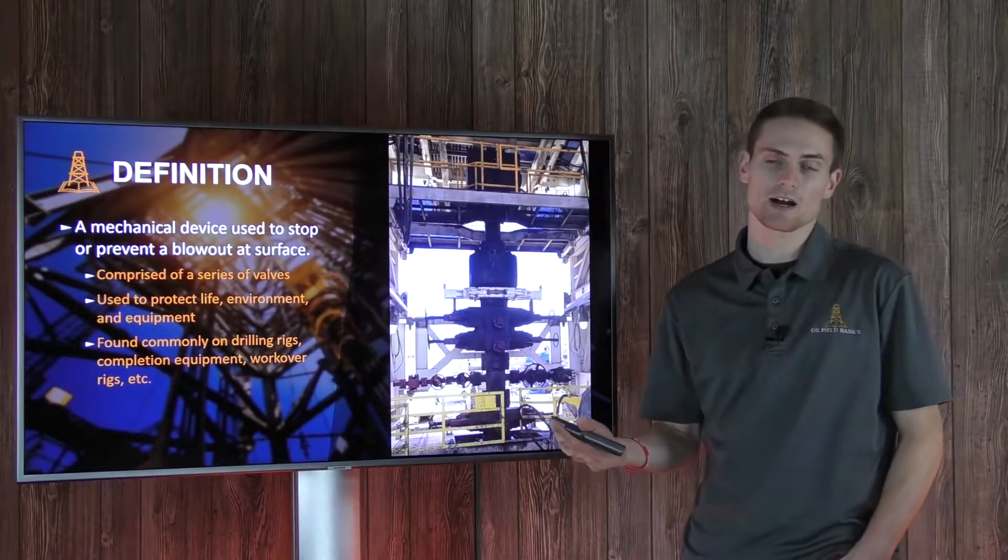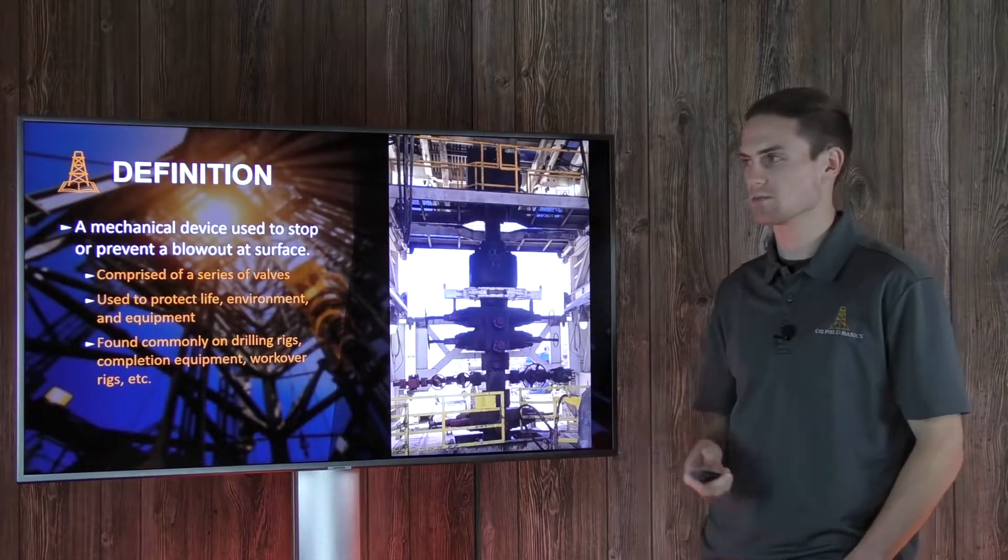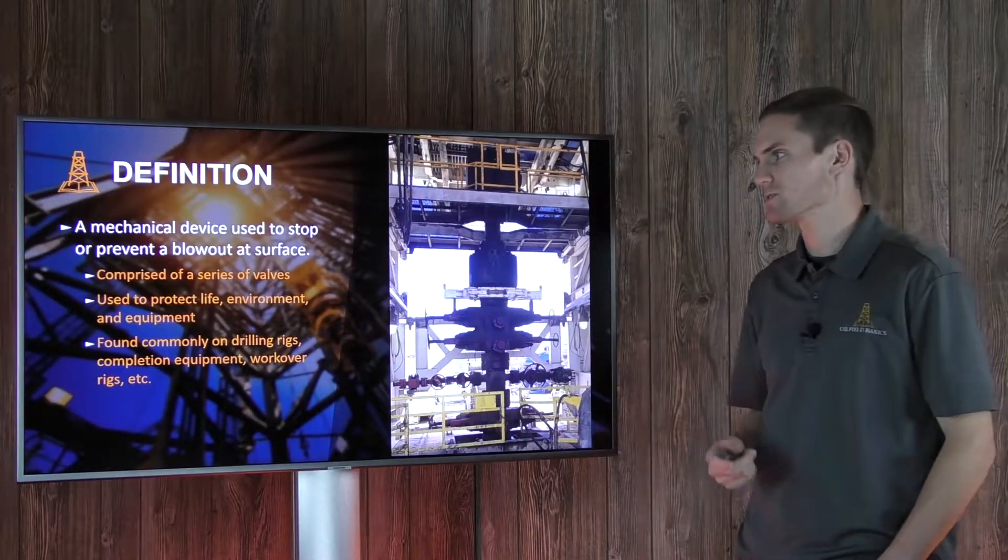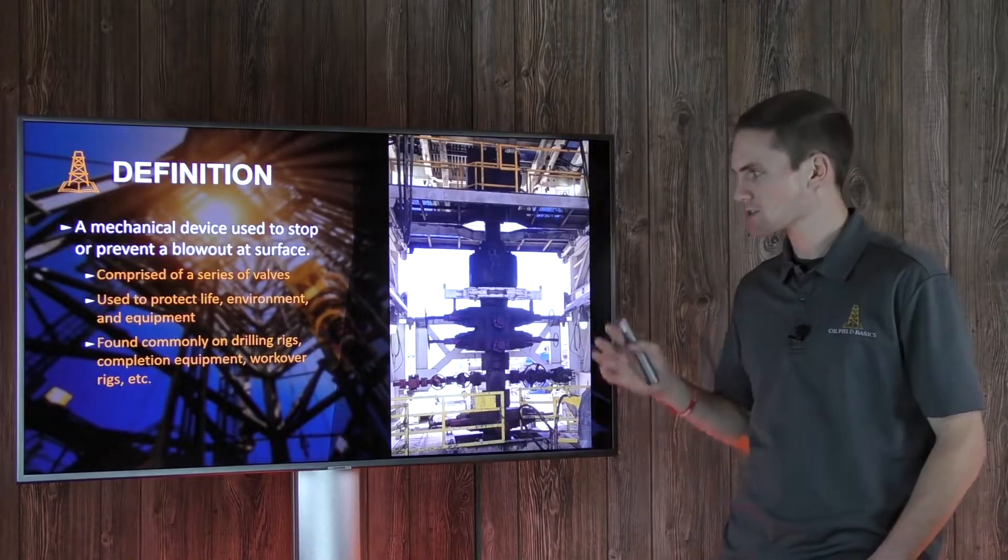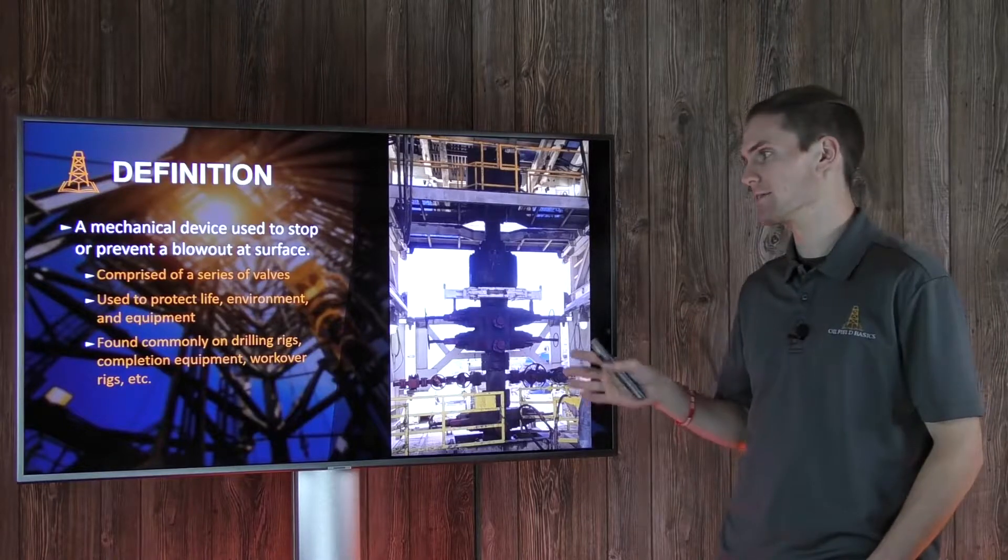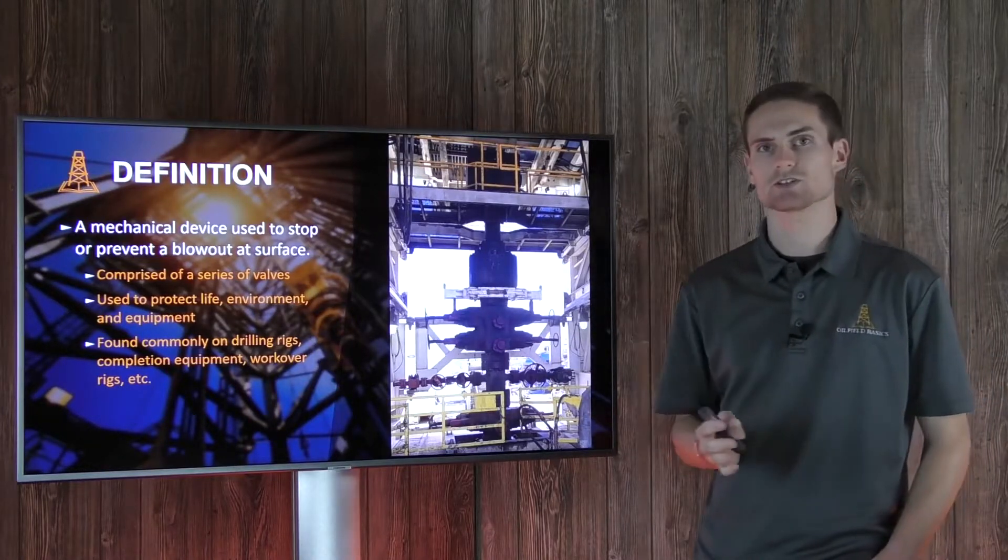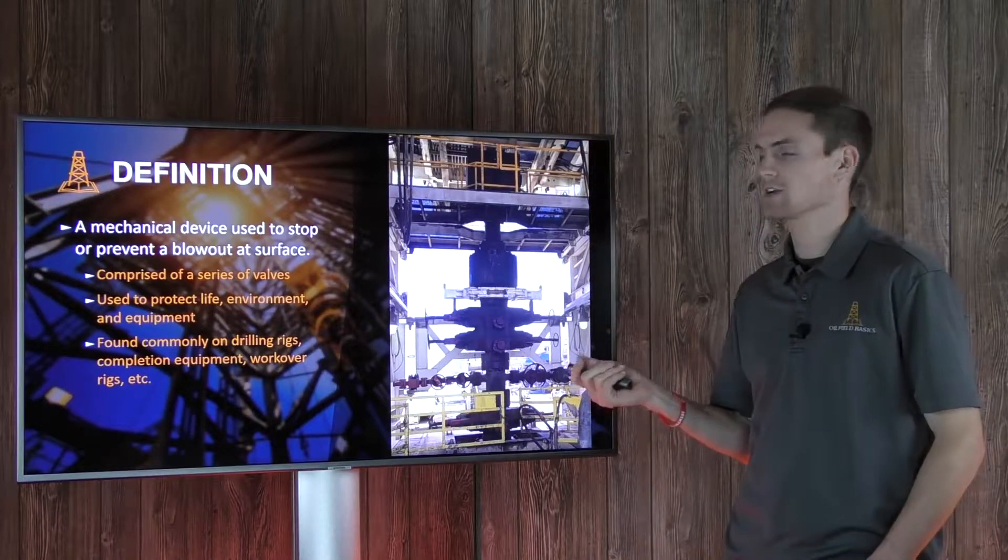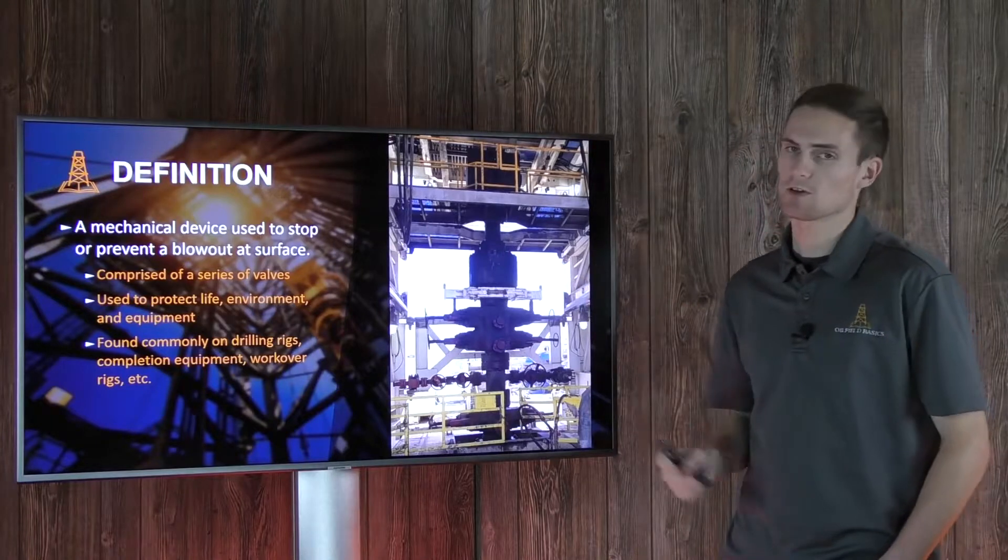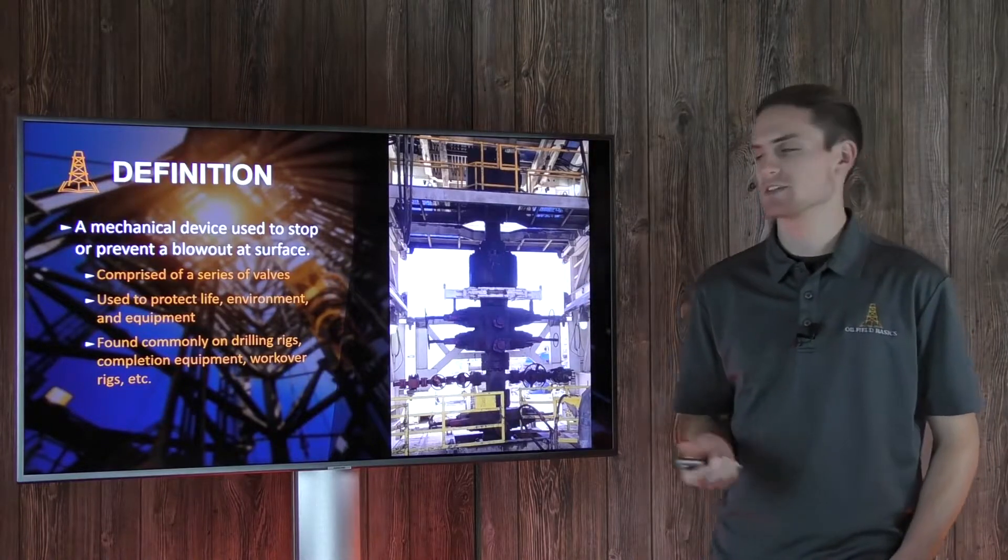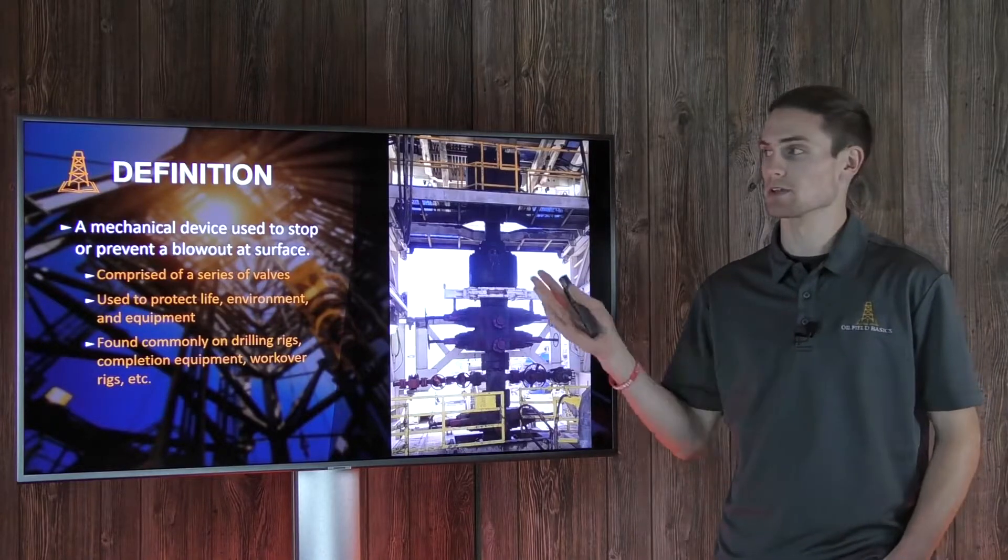We're going to talk about that in another video which is going to be about the types of BOPs or type of valves on the BOPs. This is also going to be used to protect life and environment and equipment, all of which are very important things that we are trying to protect and conserve during our operations. Also note that this is going to be found all across our industry, especially on drilling rigs. It's going to be on every single rig, equipped with a blowout preventer right below the rig floor and above the wellhead. This is going to be used to isolate any pressure or kicks or anything that we could see that would lead to a blowout.